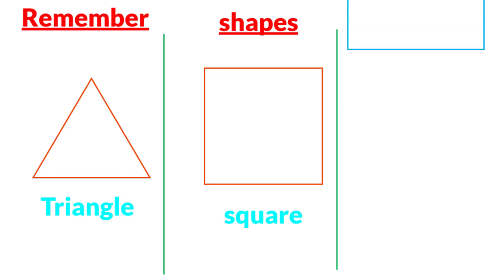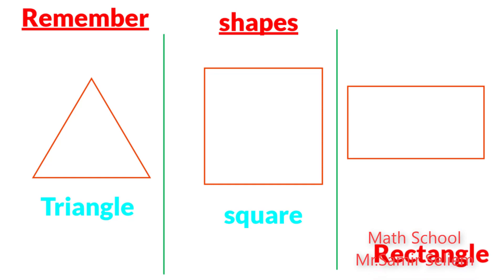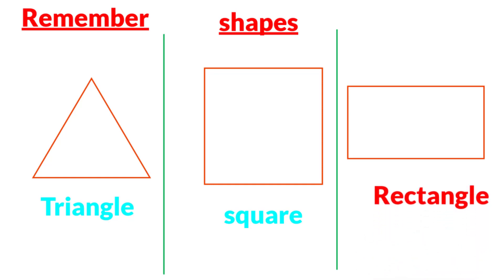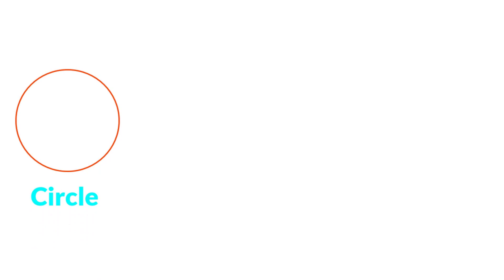The third shape is rectangle. So: the first is triangle, the second is square, the third is rectangle. Next guys, we studied before circle.